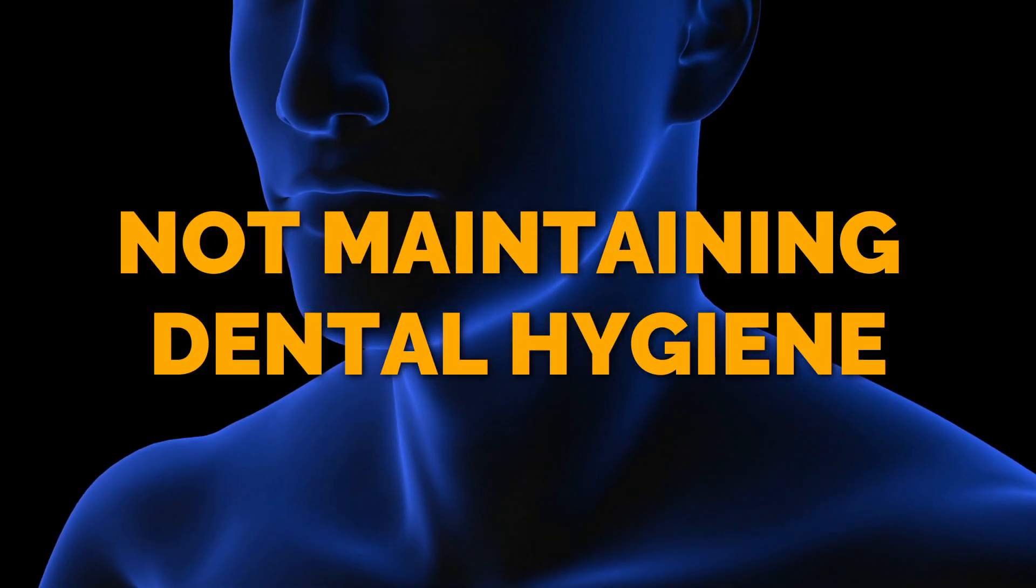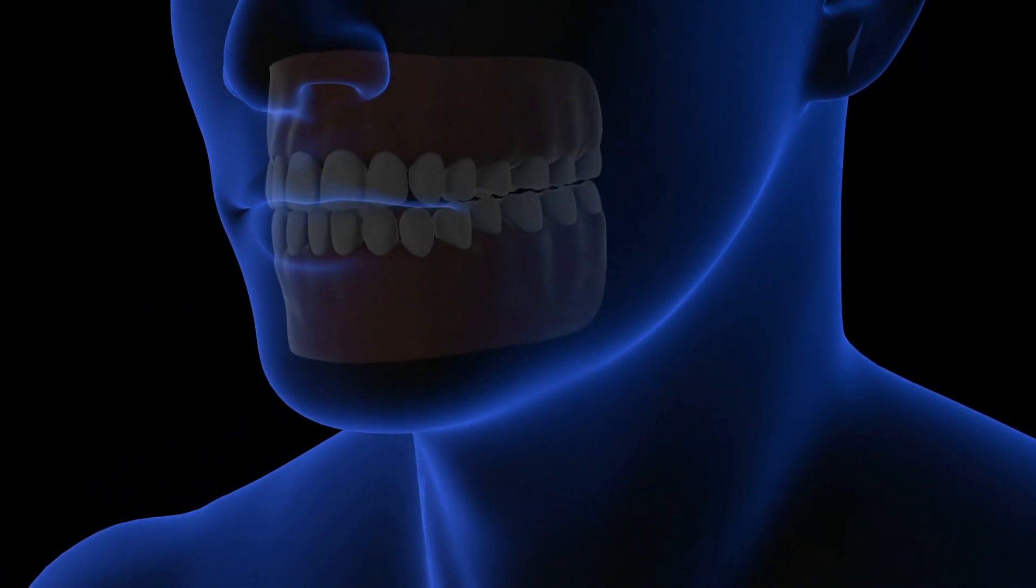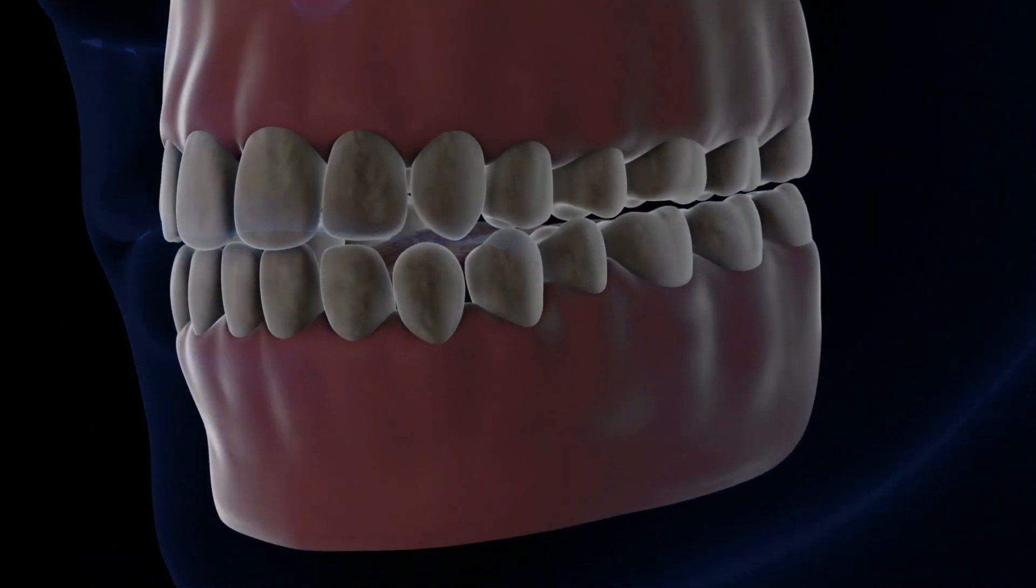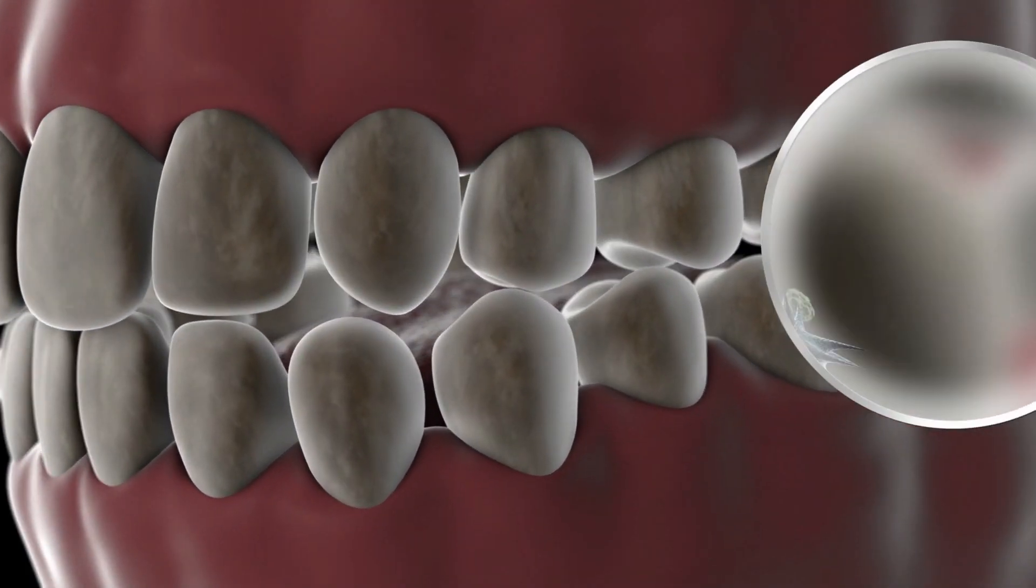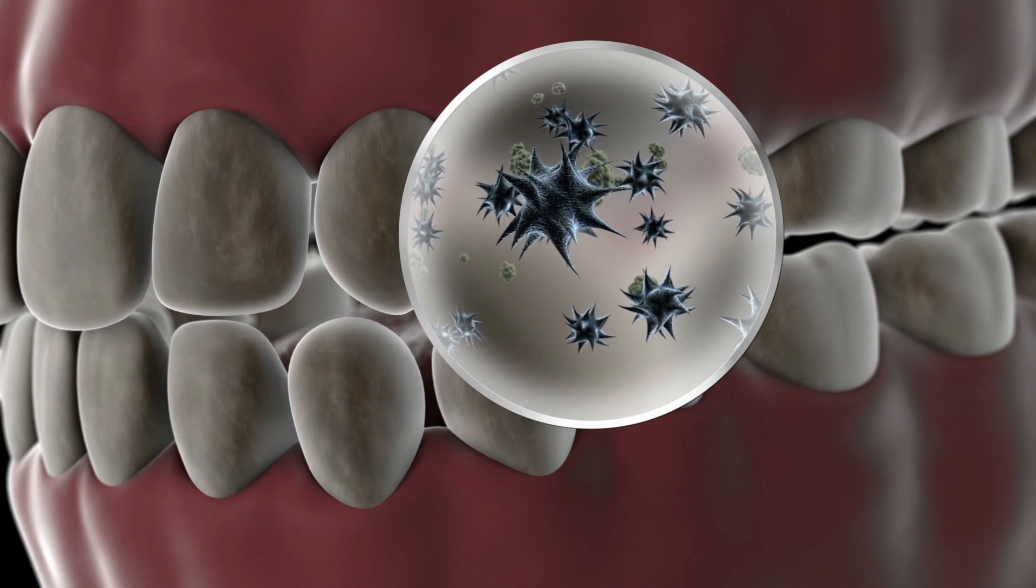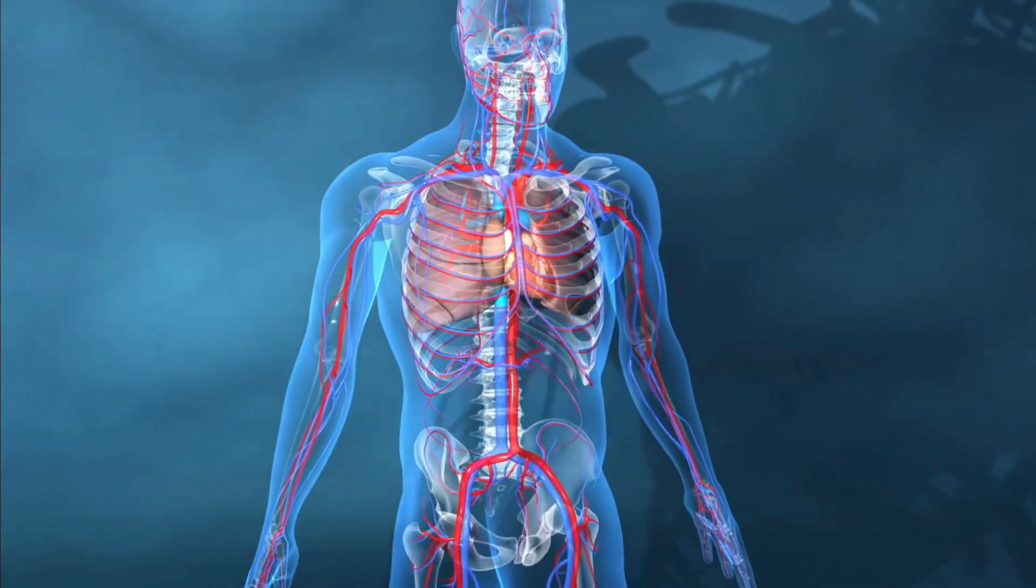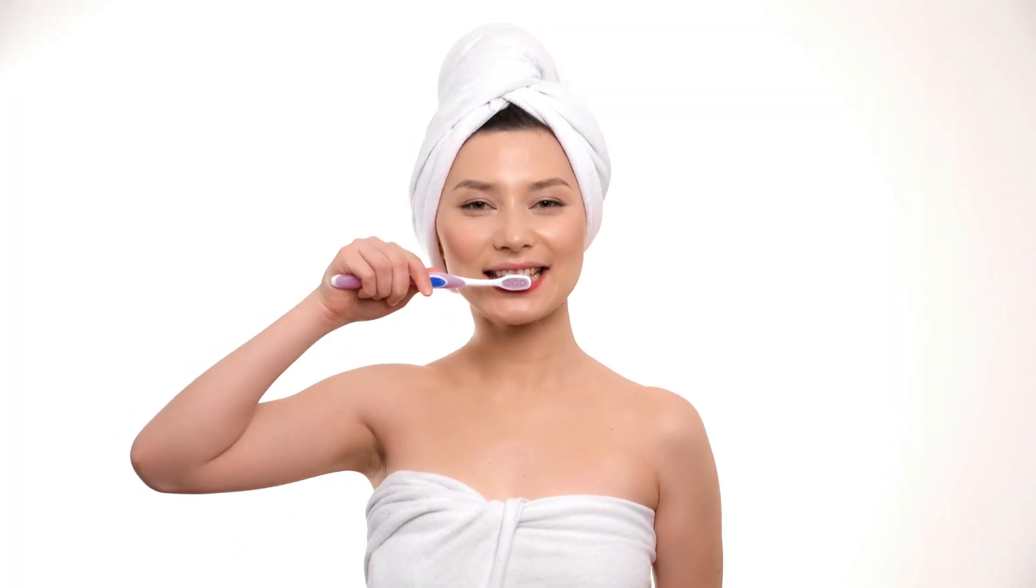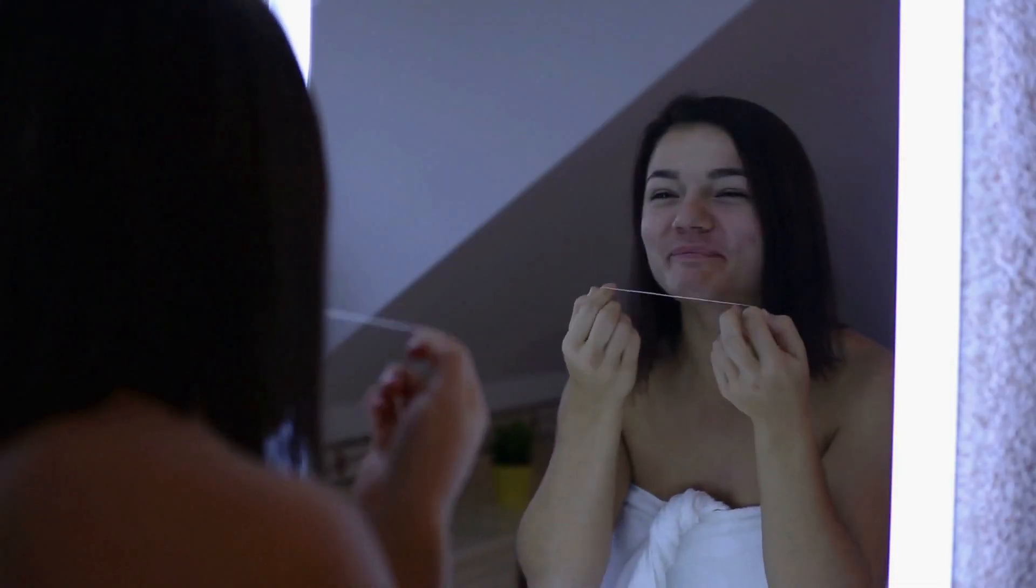Not maintaining dental hygiene. Gum disease and heart disease are strongly linked, although the precise reason is unknown. But one concept is that the accumulation of plaque causes inflammation, as the bacteria causing gum disease assists inflammation, which is the prime cause of atherosclerosis. The simple solution to avoid this is to brush and floss daily.